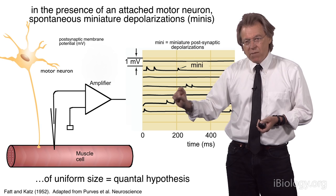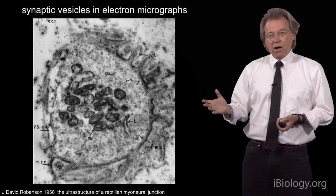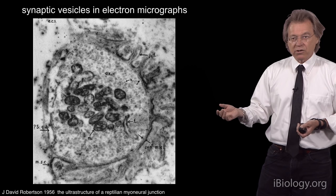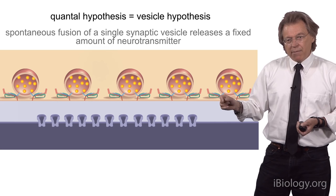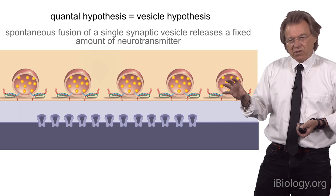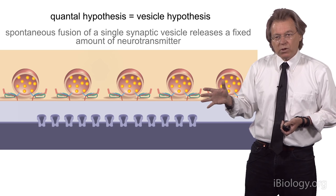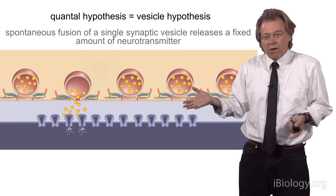Katz was aware of electron micrographs that had just recently been done of the neuromuscular junction — this one by David Robertson — and as you can see, there are synaptic vesicles visible in this micrograph. The way Katz thought about this was that maybe these vesicles are filled with neurotransmitter, and their size determines that there's a fixed amount of neurotransmitter in them. Occasionally, these spontaneously fuse with the plasma membrane, a few ligand-gated ion channels open, and you'll see a fixed response.